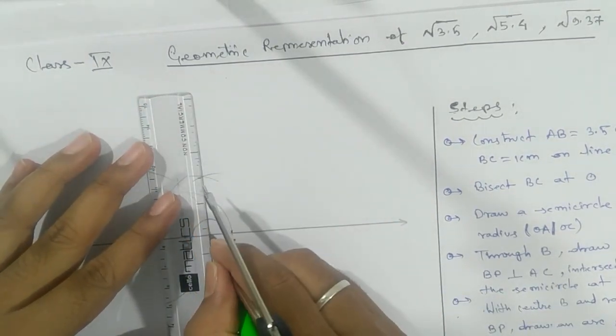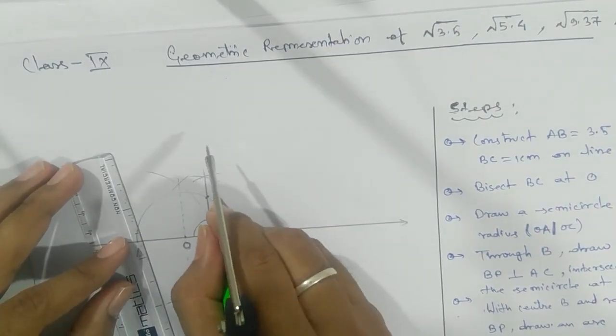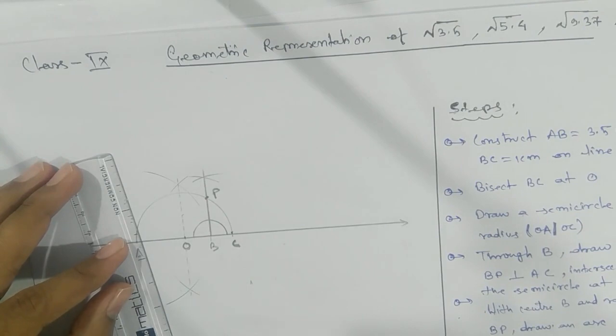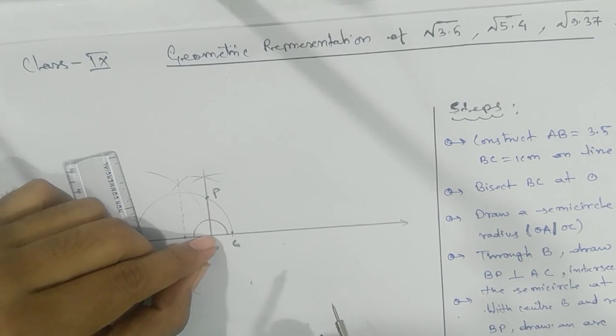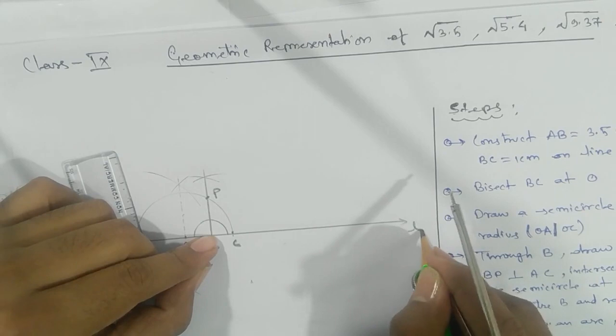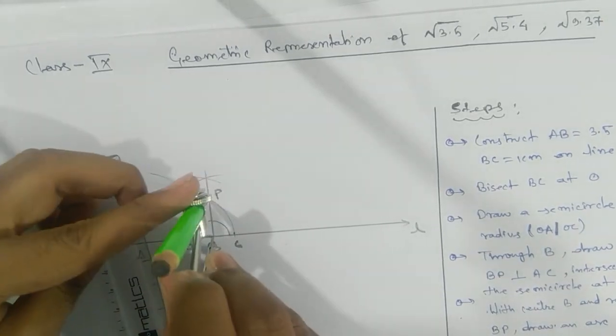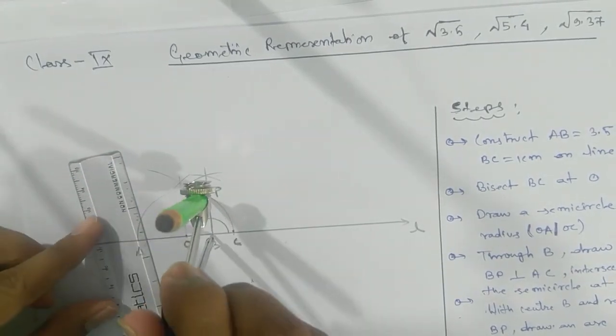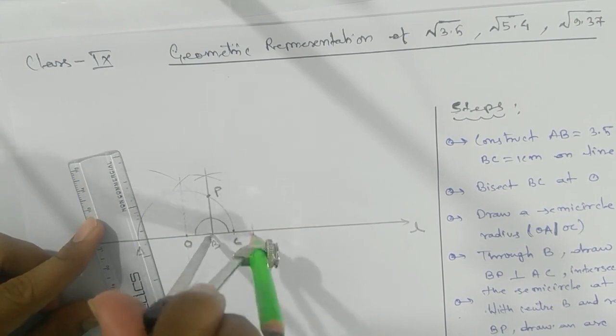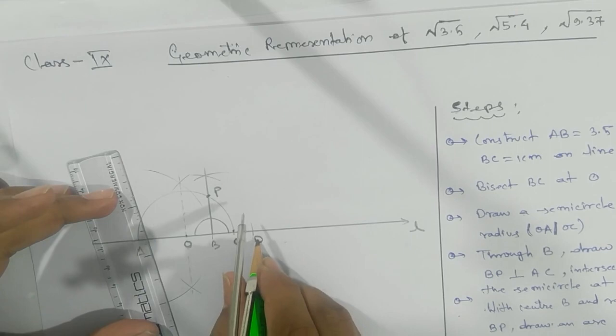We need to look at this intersecting point - give it a name P. Okay, take the measurement of BP. With center B, draw an arc on line L. Let's see. Here we have the measurement of BP. You can see here, draw an arc on this one and give it a name D. This point...